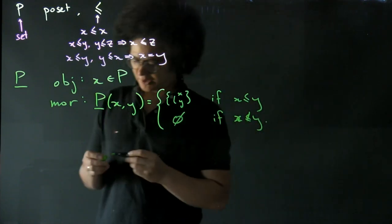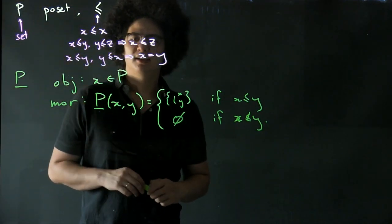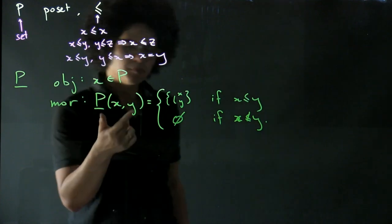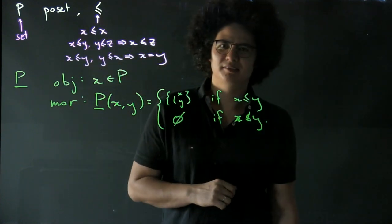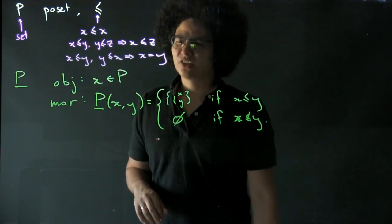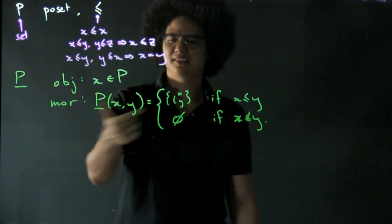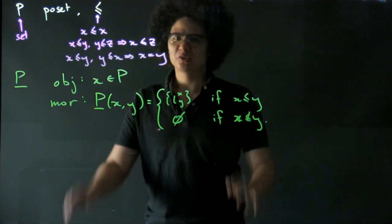So that's our morphisms. We want to say what composition is. There's only one, there's at most one morphism between two objects. And so our composition is forced upon us by the fact that there's only one. There's only one choice.